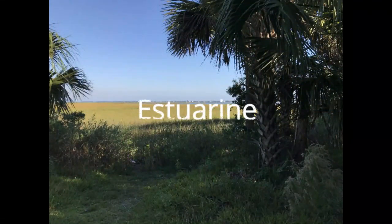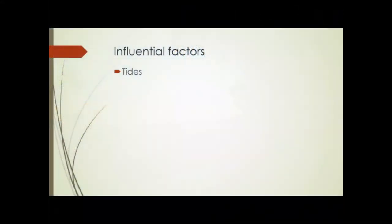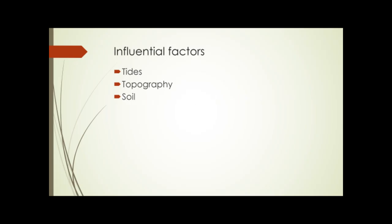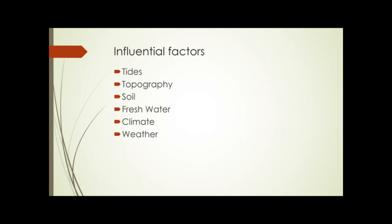The major factors that influence characteristics of coastal systems are tides, topography, soil, freshwater, climate, weather, and other aspects such as salt spray, non-native plants, and human activities.